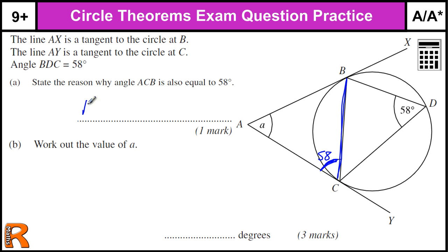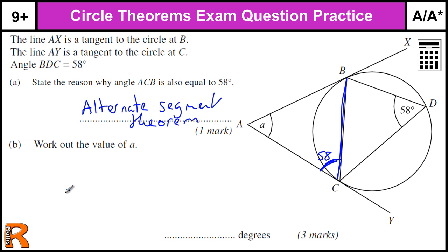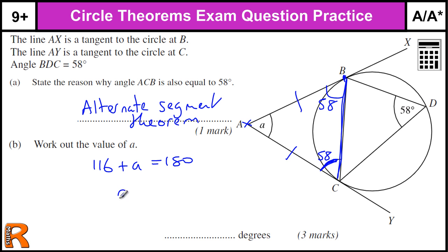So angle ABC is 58, and the reason is the alternate segment theorem. That's the only one with really a name, so if you're not sure, give it a guess. Now we've got to work out the value of A. We know that the lengths of tangents from the point where they touch the circumference to the point where they cross are equal where two tangents cross. So this is an isosceles triangle, so that's also 58, and they add up to 116, plus A equals 180, so A is 180 minus 116, which equals 64 degrees.